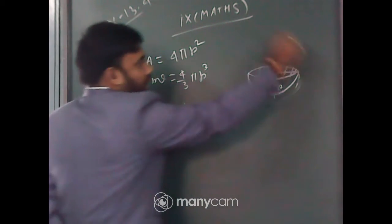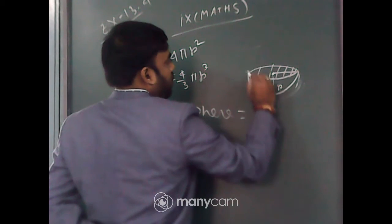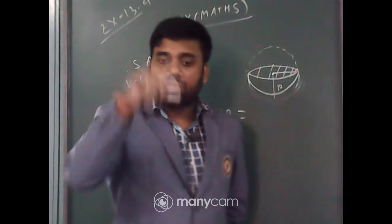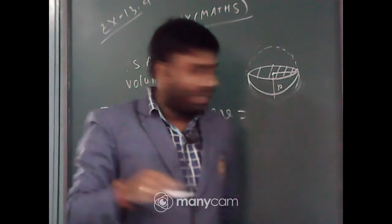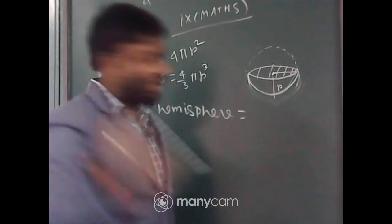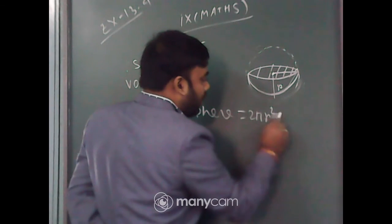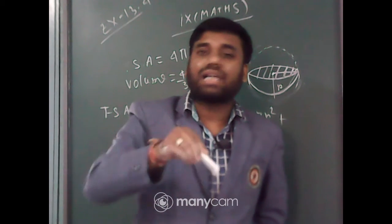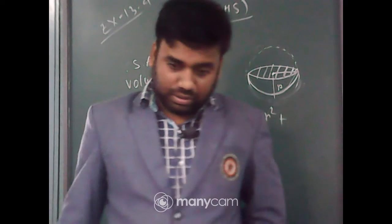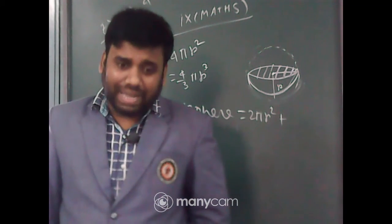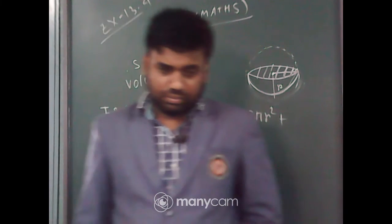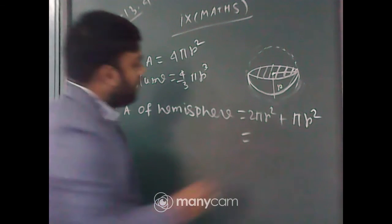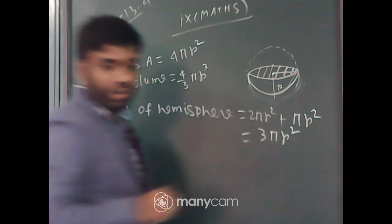Total surface area. When it is a full sphere, that is 4 pi R square. Now here, that part, what will be the area? Half of the 4 pi R square, that is 2 pi R square. But one thing is there, the plane surface. It looks like a circle in a plane, and you know that area of the circle is pi R square. So 2 pi R square plus pi R square, that is 3 pi R square. Got it?